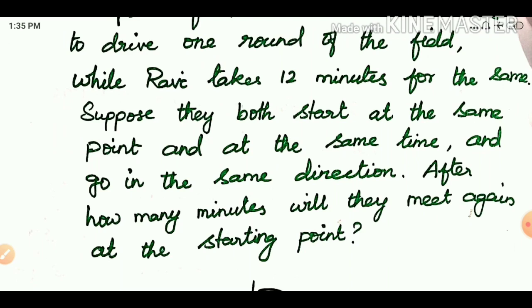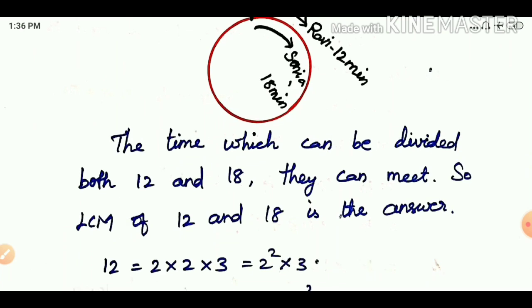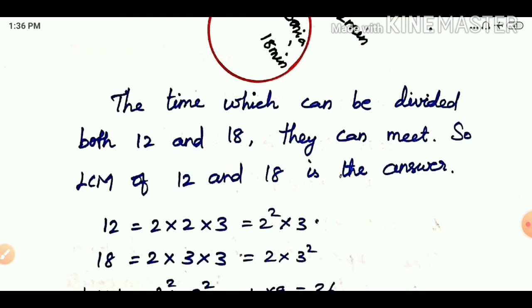There is a circular path. Ravi takes 12 minutes for a full round, Sonia takes 18 minutes. Both start at the same point, same time, same direction. To meet again at the starting point, we need the time which can be divided by both 18 and 12. So LCM of 12 and 18 is the answer.